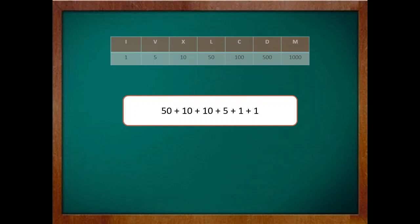So further it becomes 50 plus 10 plus 10 plus 5 plus 1 plus 1. Finally each of these numbers have a Roman symbol corresponding to them. So 77 can be written as LXXVII.